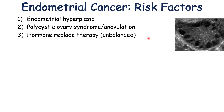Another risk factor is hormone replacement therapy, especially hormone replacement therapy that is unbalanced — meaning that there is no progesterone with it. If it's just an estrogen-based hormone replacement therapy, then we're not going to have that progesterone to help balance or counteract the growth on the endometrium. Both of these are examples of unopposed estrogen, where progesterone is not present to oppose the effects of estrogen on the endometrium.